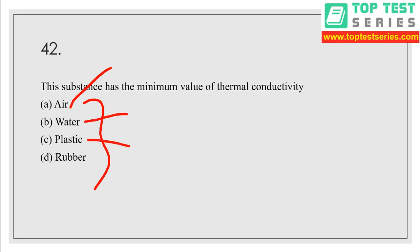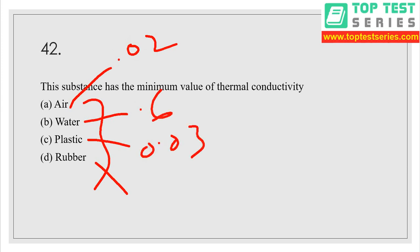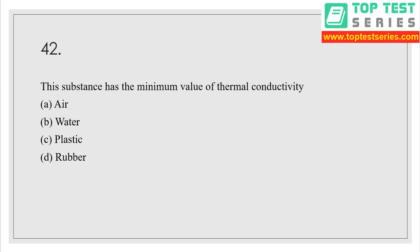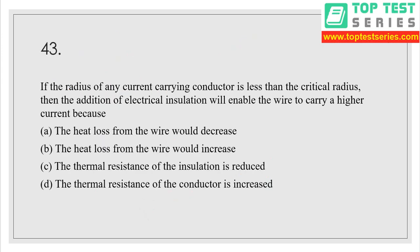Thermal conductivities of all the substances: air = 0.02, water = 0.6, plastic = 0.03, and rubber varies from 0.09 to 0.63 depending on type. After looking at all the thermal conductivities, air has the minimum, so option A is the correct answer.